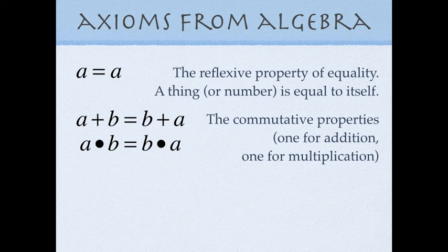Two more properties from algebra: the commutative property, which says that the order doesn't matter as long as you are adding, or the order doesn't matter as long as you are multiplying.